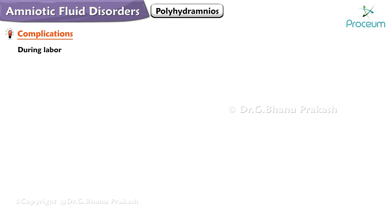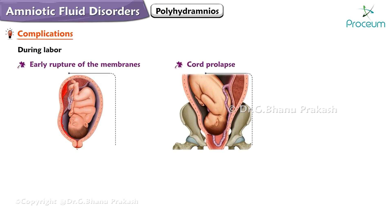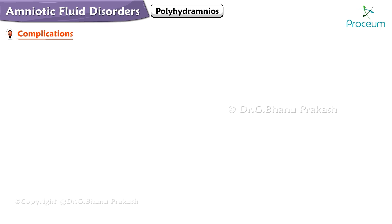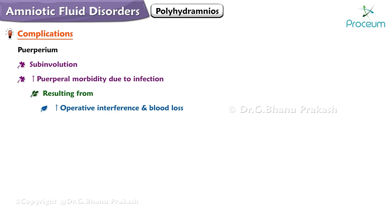Complications during labor include early rupture of the membranes, cord prolapse, uterine inertia, retained placenta, postpartum hemorrhage and shock, and increased operative delivery due to malpresentation. Complications during the puerperium include subinvolution and increased puerperal morbidity due to infection, resulting from increased operative interference and blood loss.